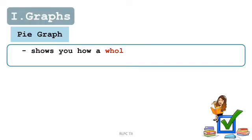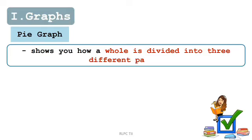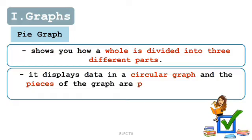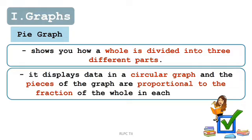Let's proceed now with pie graph or also known as pie chart. Pie graph shows you how a whole is divided into different parts. It also displays data in a circular graph and the pieces of the graph are proportional to the fraction of the whole in each category.